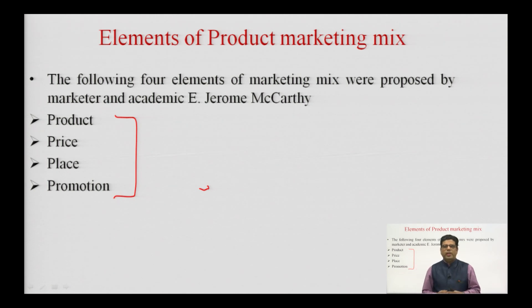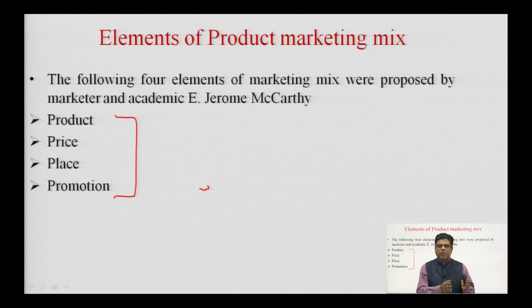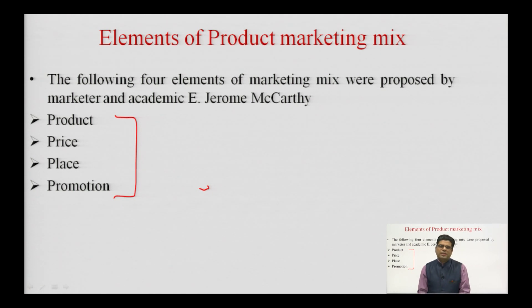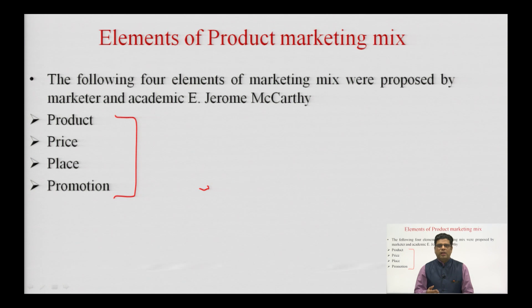A product is defined as an offering which will satisfy the need of a consumer while being tangible in nature. Technically, a product is different from a service. A product is tangible — for example, a pen which I can hold and which has some dimension. A product satisfies a consumer; when I have a need of writing, I will go and purchase a pen which is a tangible product.